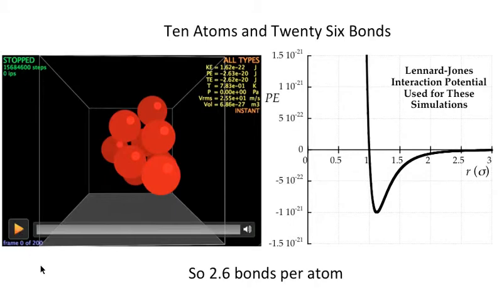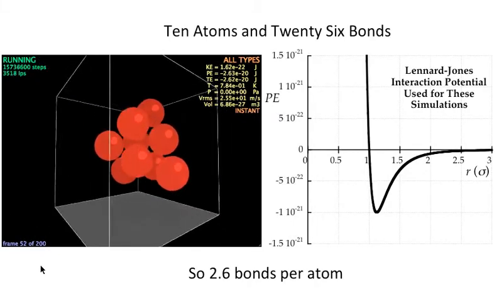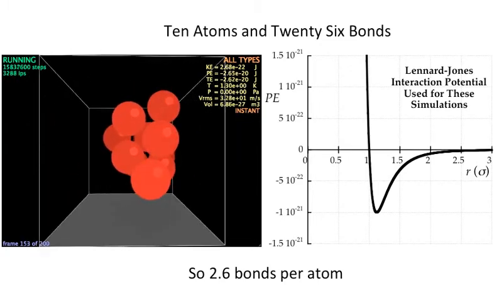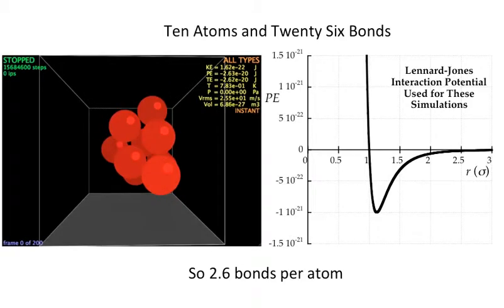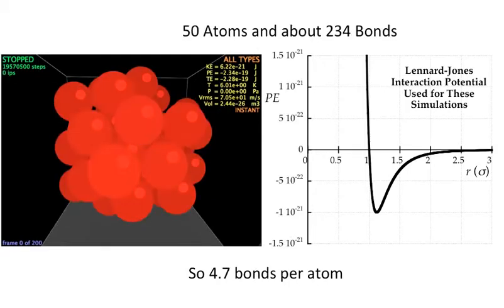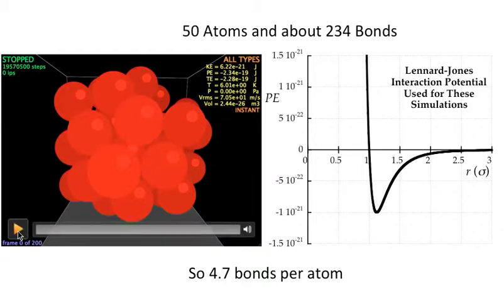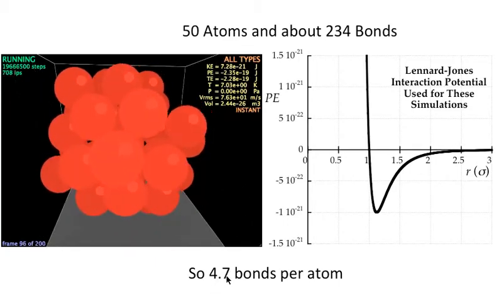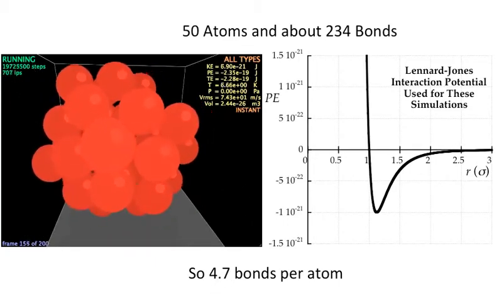Ten atoms. If you wanted to you could stop this simulation and count those up. There's 26 neighboring atoms and so 26 bonds. But you could also just look up the potential energy here, minus 26. So 26 of those gives me a bond energy of negative 26. It's 2.6 bonds per atom. What about 50? About 4.7 bonds per atom. I'm going up a little faster here but the number of bonds per atom has gone up to 4.7. It's not going to go up a lot higher than this.